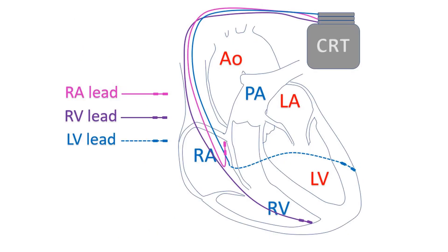The dyssynchrony is treated by appropriately timed electrical signals to the right atrium, right ventricle, and left ventricle. The right atrium is the right upper chamber of the heart and the right ventricle is the right lower chamber. In effect, CRT is a three-chamber pacemaker, though it is not being implanted for increasing the heart rate like a usual pacemaker.